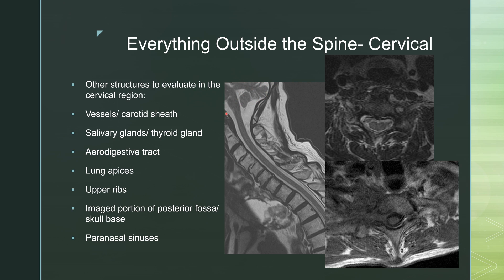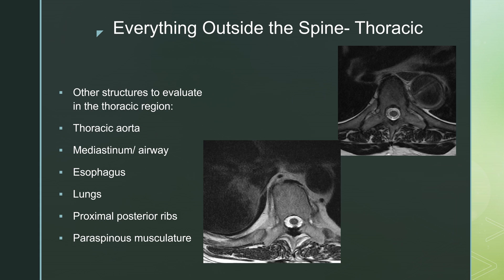You can also see whatever is visible of the posterior fossa, and sometimes enough of the paranasal sinuses anteriorly. In the thoracic spine, you evaluate the thoracic aorta, looking for something like a dissection. You can evaluate what you see of the mediastinum, looking for adenopathy or masses, any kind of airway obstruction, and the esophagus. For the lungs, here you have airspace disease in the right lower lobe in somebody with referred pain to their back. You can see those proximal posterior ribs and the paraspinous musculature.